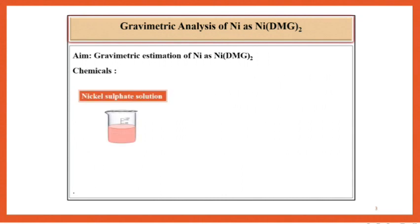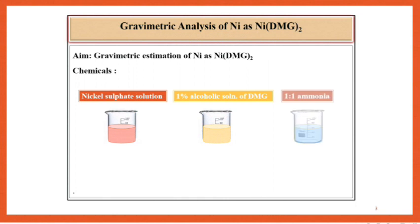Chemicals required are nickel sulfate solution, 1% alcoholic solution of DMG, and 1:1 ammonia.